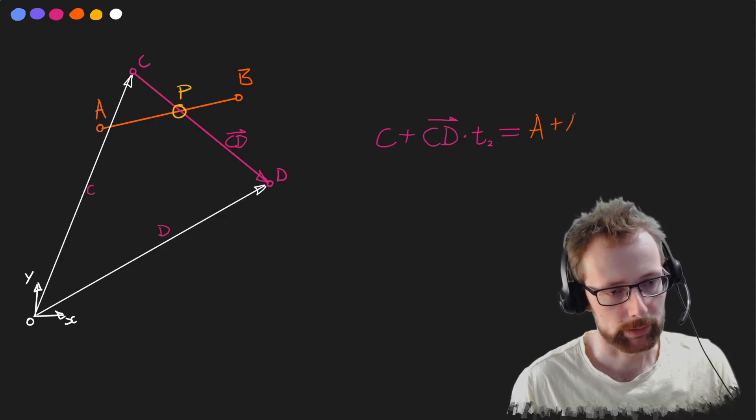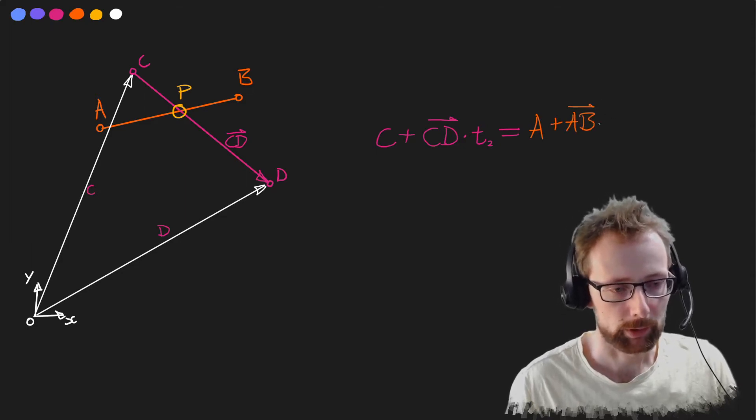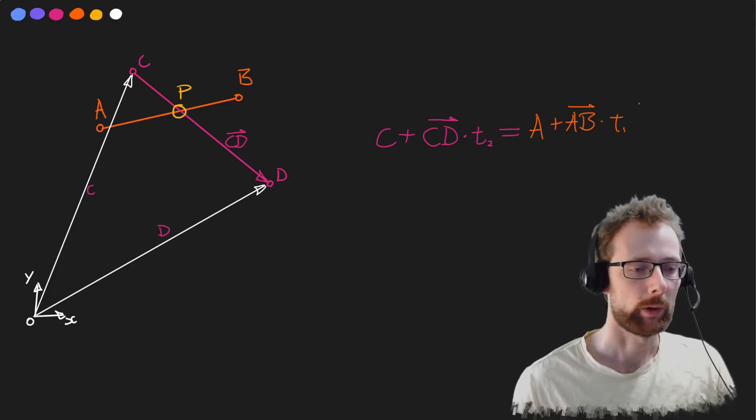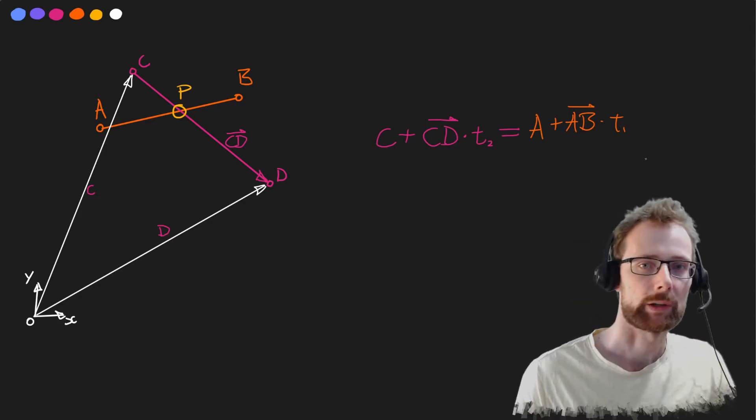If I go a plus ab multiplied by another scalar, a separate one called t1, when this equation is satisfied then we found our intersection point p.